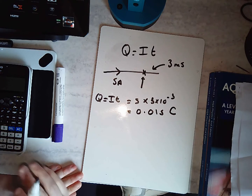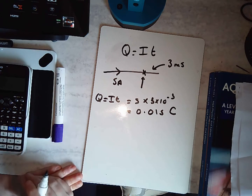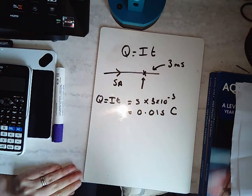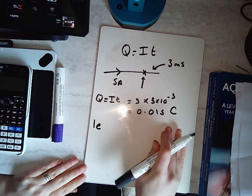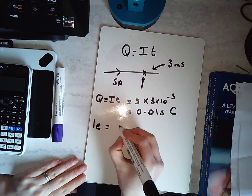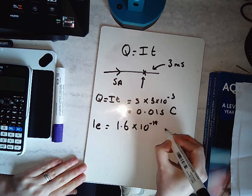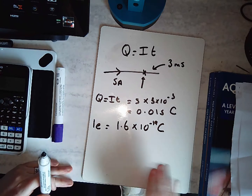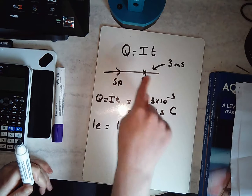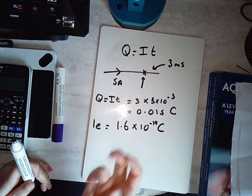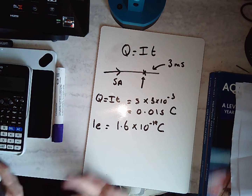We know that electrons are the flow — the current is the flow of electrons around the circuit. Now, one electron doesn't have that much charge. In fact, one electron has 1.6 times 10 to the minus 19 coulombs of charge. This is basically a way of making it easier to understand, and we're not talking about the electron flow, we're just talking about the current.